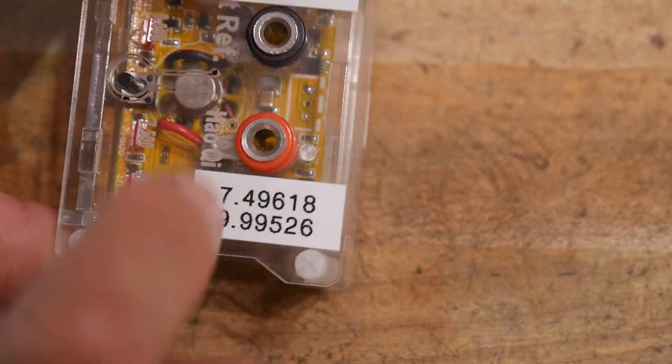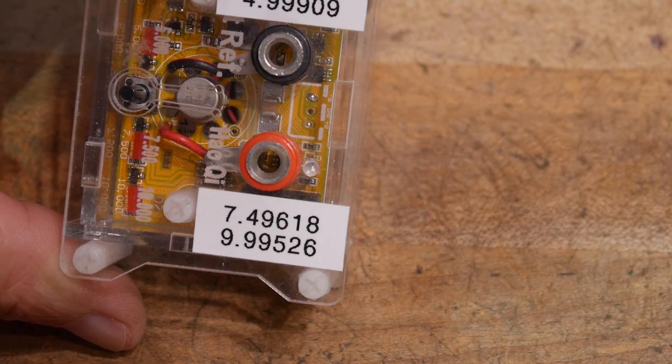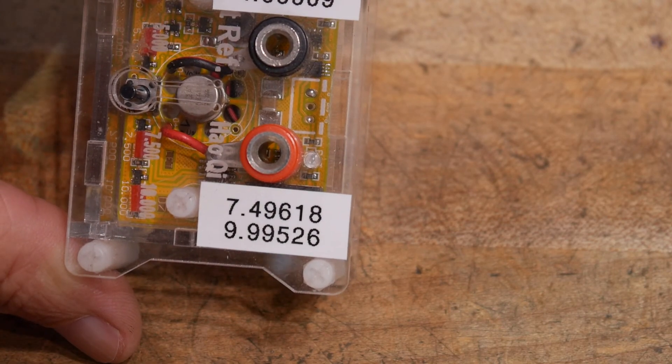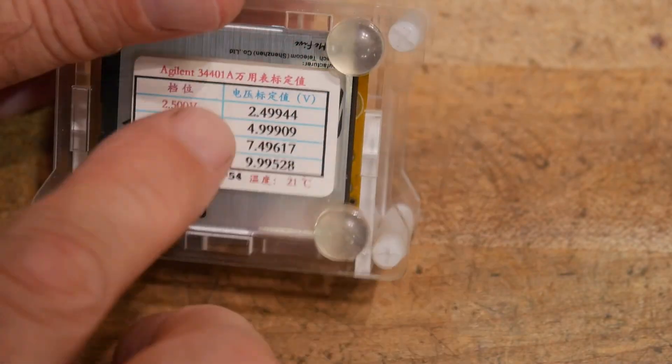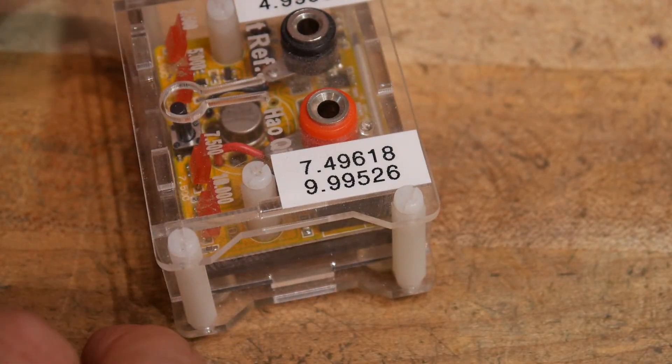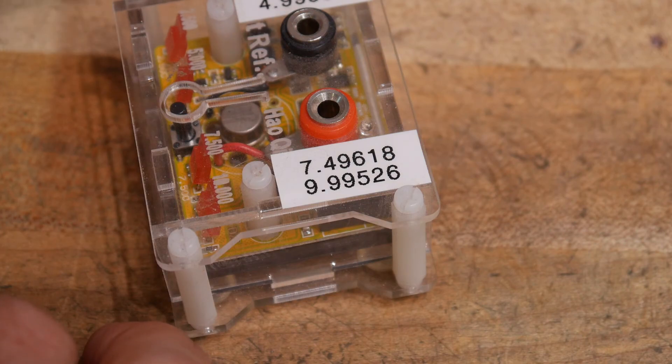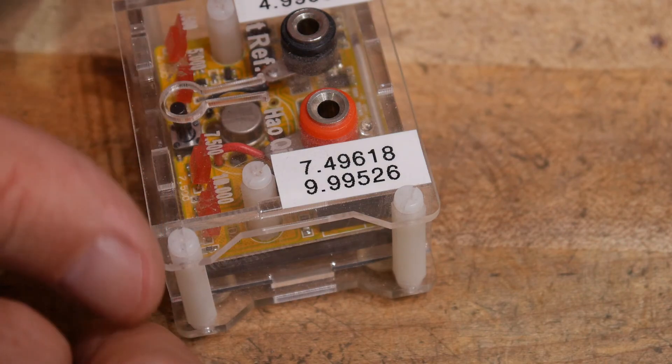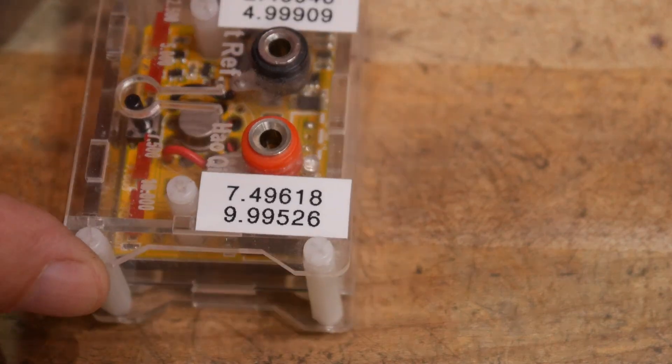And so, these are the numbers that I got, and I'm not sure how calibrated his meter was. I did measure it against my Keithley and my Agilent, and they agreed within the significant digit.